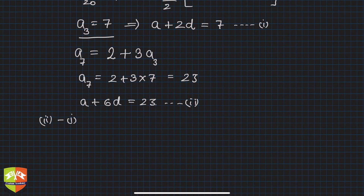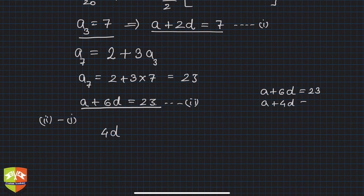Can we do equation 2 minus equation 1? Let's subtract the first equation from the second one. You will get 4d—a and a will cancel; 6d minus 2d is 4d. This is the second equation; this is the first equation. If you wish, you can write it here so it becomes easier to view. So a plus 2d is 7, and I subtracted both of them and I'm writing the result here. So 4d equals 23 minus 7, which is 16.